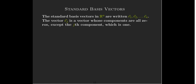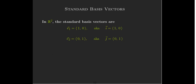So let's look at some examples. In R2, you have the standard basis vectors, e1 and e2. e1 has a 1 in the first place. e2 has a 1 in the second place. Otherwise, it's 0.